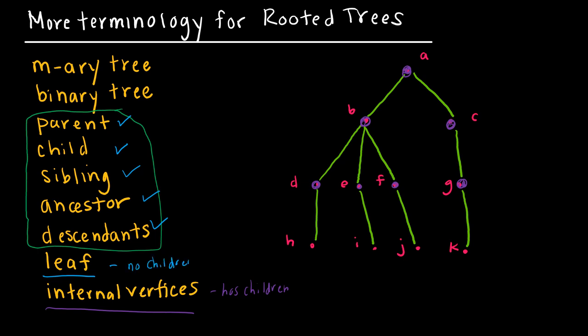A leaf is a vertex that has no children. In my graph, the leaves are H, I, J, and K — they have no children. Both leaves and internal vertices are subsets of the full rooted tree.